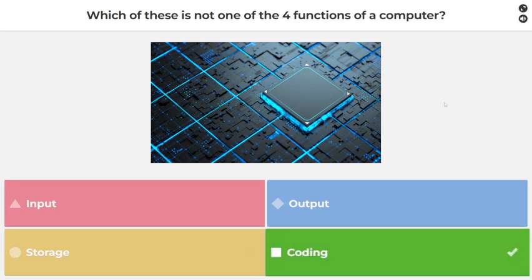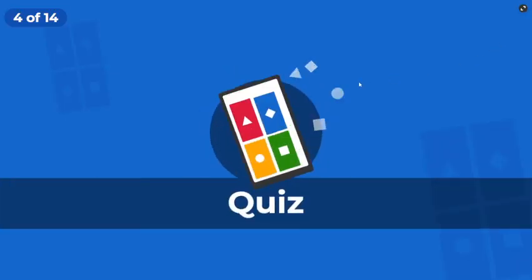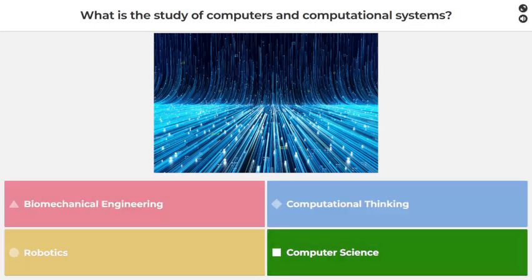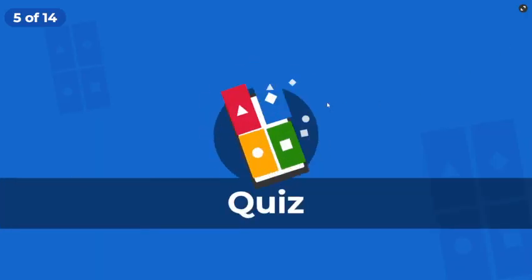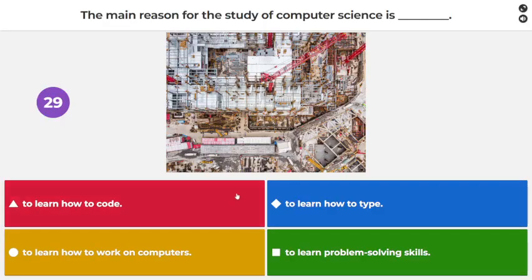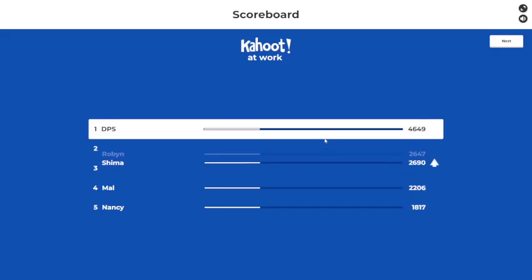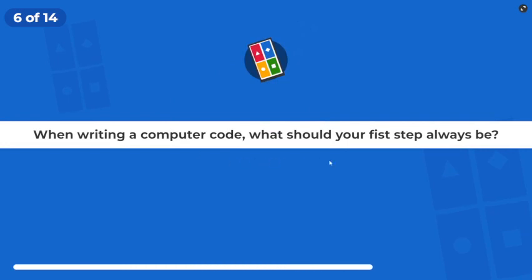Storage, coding. Yes! What is the study of computers and computational systems? Computer science. Yes! The main reason for the study of computer science is to: learn problem-solving skills, learn how to work on computers? Problem solving, yeah! When writing computer code, what should your first...